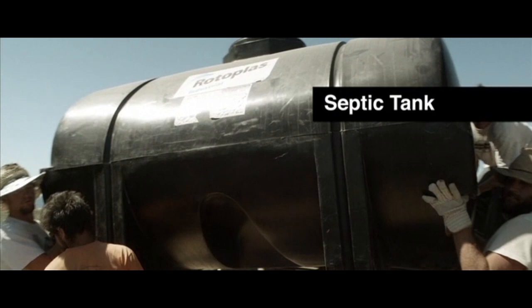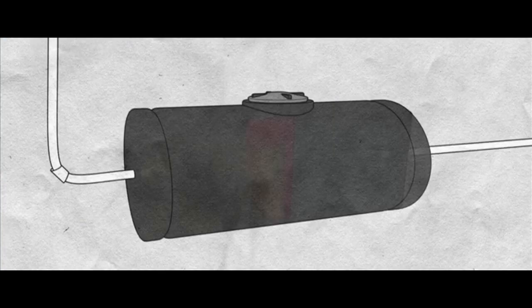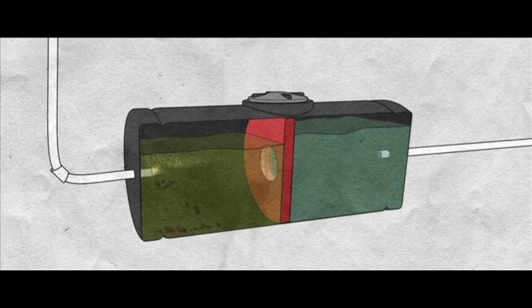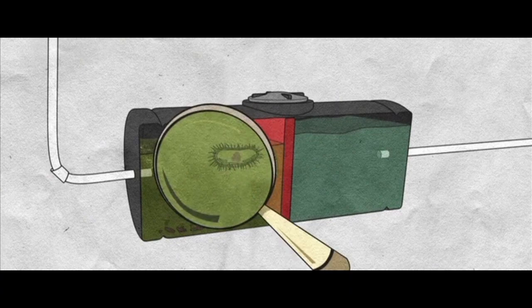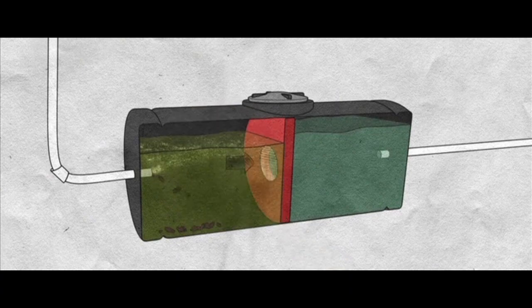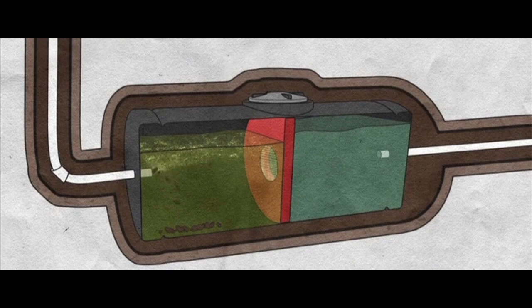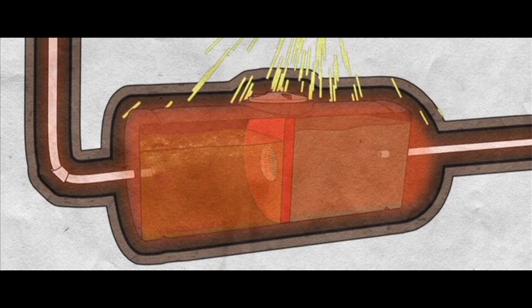The septic tank. A septic tank separates solids from liquids and uses anaerobic digestion by bacteria to treat the black water. By insulating it and adding heat, the process is accelerated.